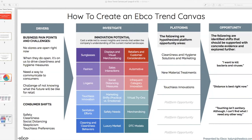Here's a preview of an EBCO trend canvas. As Aaron mentioned, we're going to cover the drivers — looking at your business pain points and challenges you're seeing right now, especially due to COVID — looking at consumer shifts that come out of the trend research we share, which will also include investigation areas. A lot of this will come from the trends we share on day one. Then we'll build on what makes sense from an analogous and adjacent perspective to your exact category, where we can glean opportunity spaces and cross learnings. Then we'll look at how these turn into hypothesized platform opportunity areas, and finally this will be translated into identified shifts supported with concrete evidence and explored further with your team.